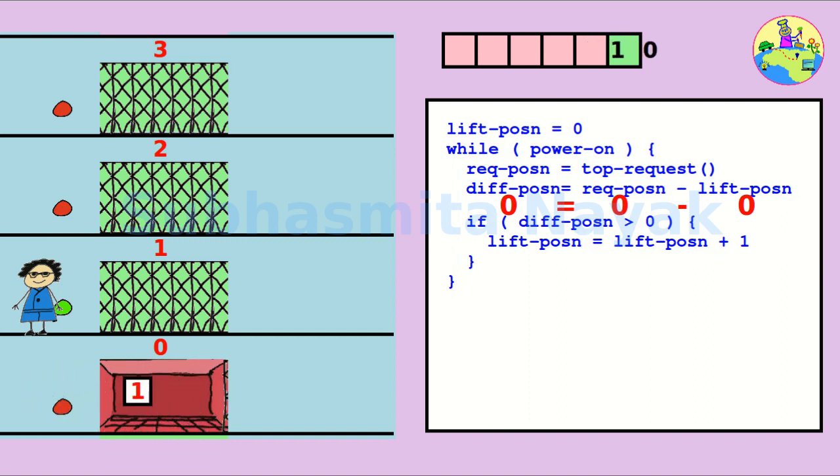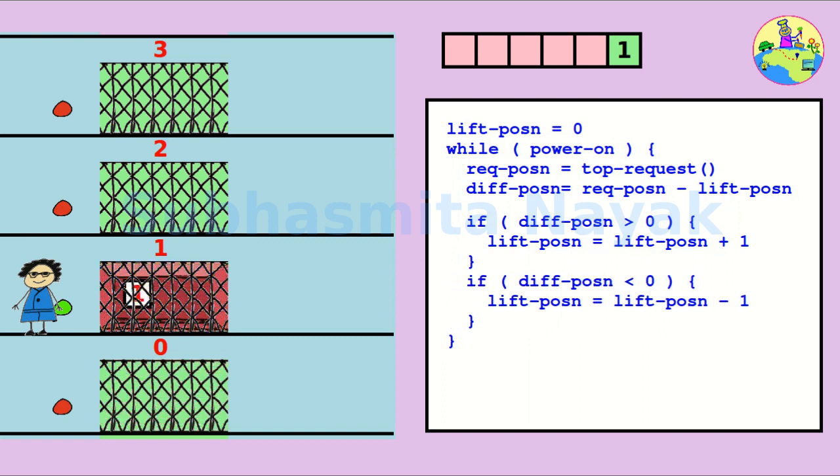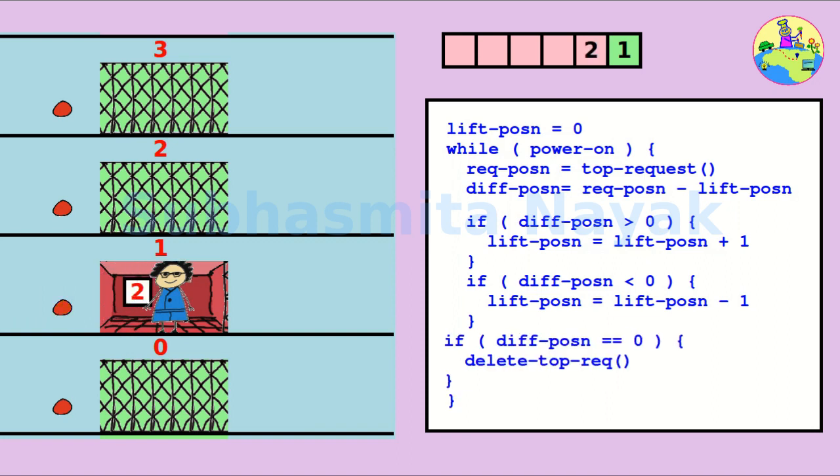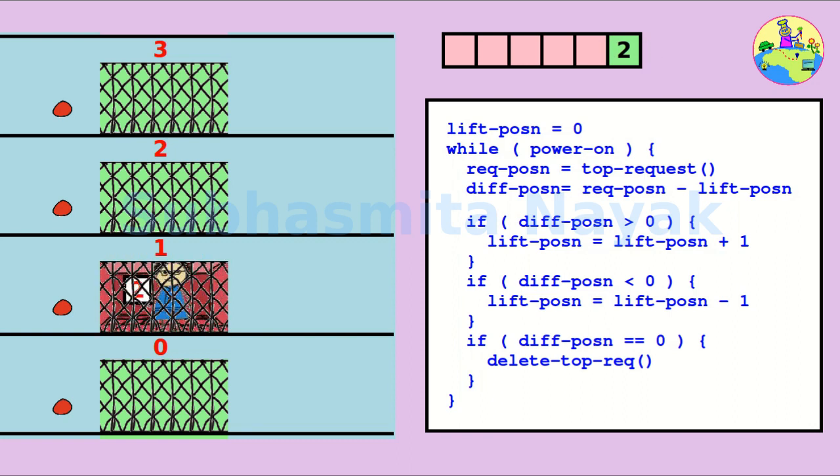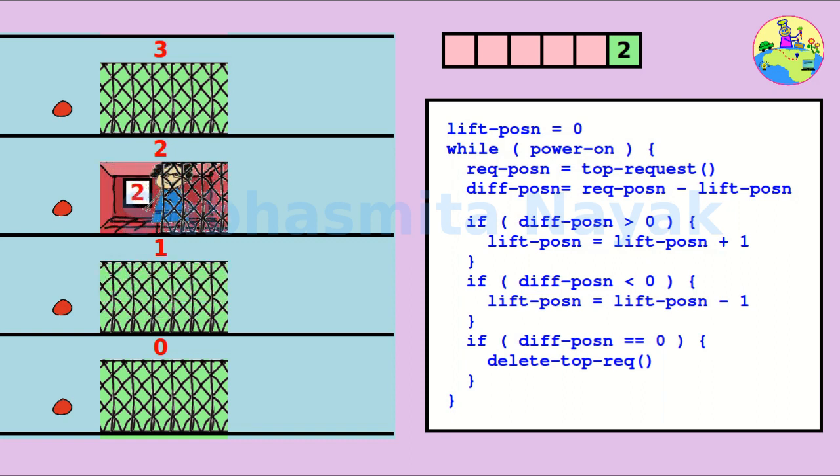Once it reaches the requested position, no action is required, but it has to delete the current request from the list so that the next request will come to top and that will be accepted for the next round. We are done with this example, and this is how the machine will work.